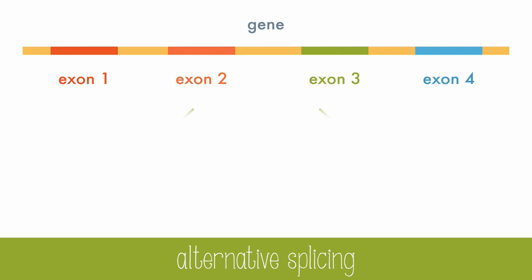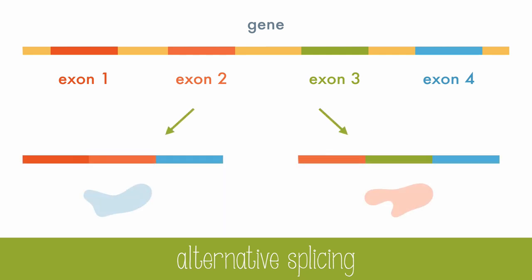Eukaryotes can selectively remove exons of a gene to form different proteins from the same gene. This is called alternative splicing, and it greatly increases the variety of proteins that can be produced.